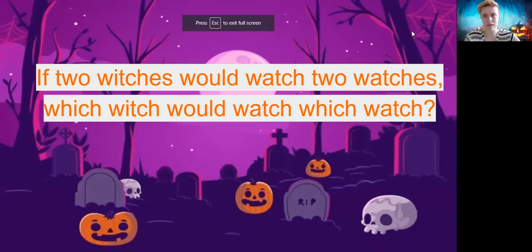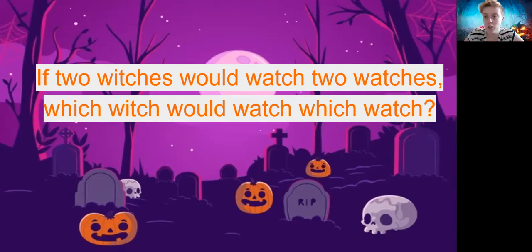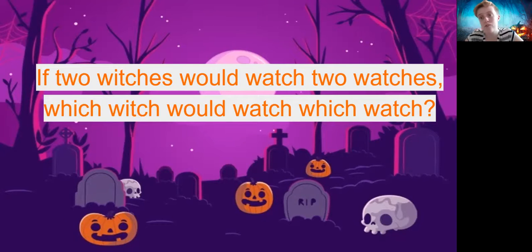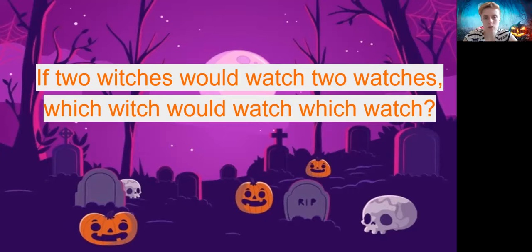Here we go. Our first tongue twister: 'If two witches would watch two watches, which witch would watch which watch?' Even saying it, I'm a little bit confused. But tongue twisters like this that are confusing and fun to say work really well for enunciation. Once you're able to say it slower, try saying it faster. Can you say it five times fast? If two witches would watch two watches, which witch would watch which watch? If two witches would watch two watches, which witch would watch which watch?